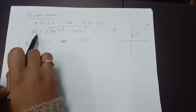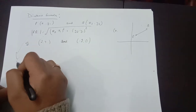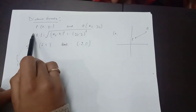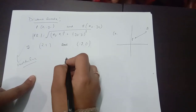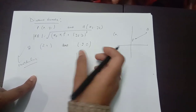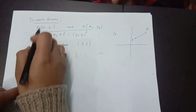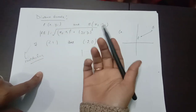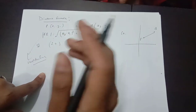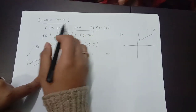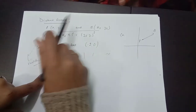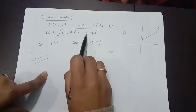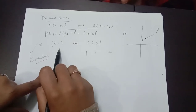The formula is: |PQ| = √((x2 − x1)² + (y2 − y1)²). The mod symbol means the distance is always positive — distance cannot be negative, so we use the modulus to ensure a positive result.